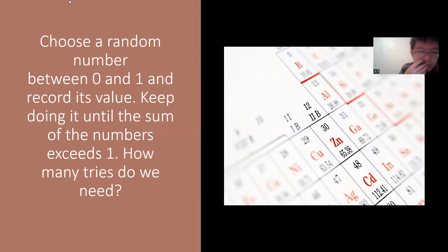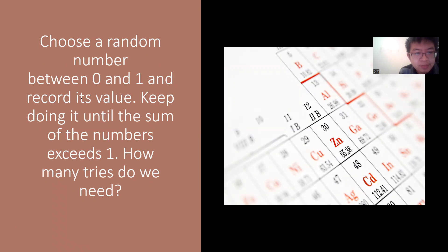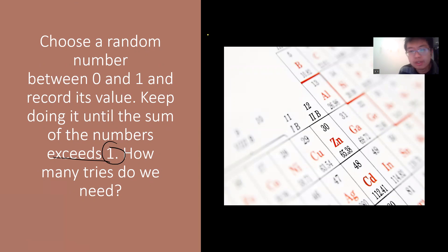Hey, what's up. Today I want to solve this interesting probability interview question. If you want to see more interview questions, you can check out my video list posted below. So: choose a random number between 0 and 1, record the value, and keep doing it until the sum of the numbers exceeds 1. How many trials do we need?